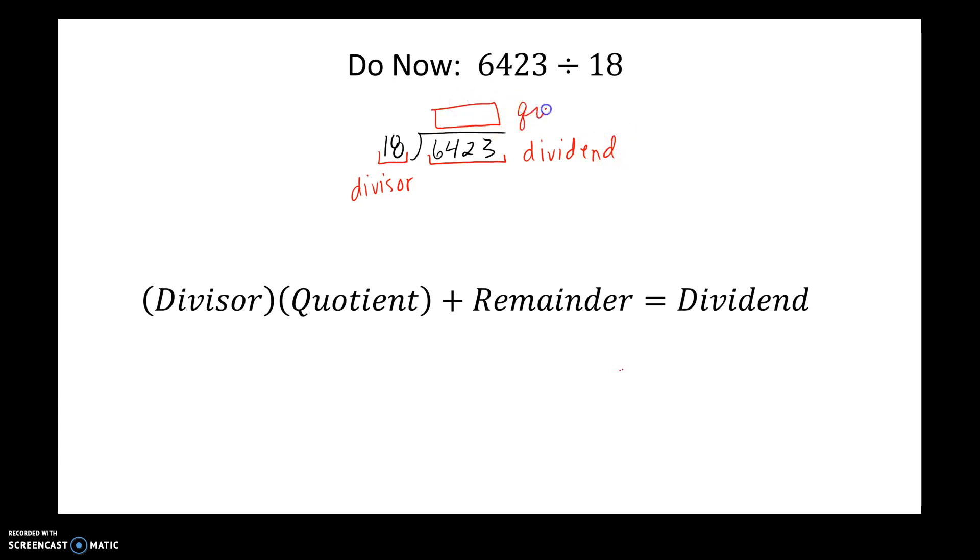Your answer is your quotient. And then, of course, after you do all your divide, multiply, subtract, bring down, whatever number remains is your remainder. Okay, then I want you to actually check your work. So whatever your divisor is, 18 times the quotient you find plus the remainder you find better equals 6423.